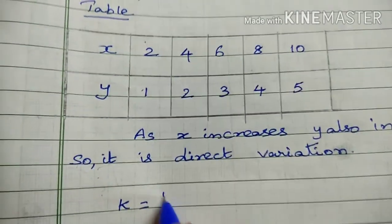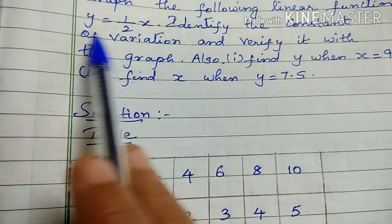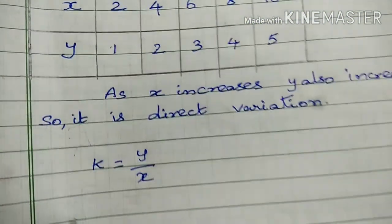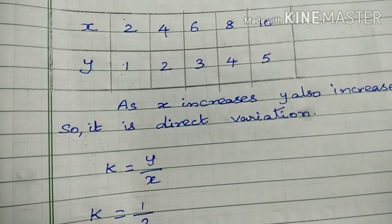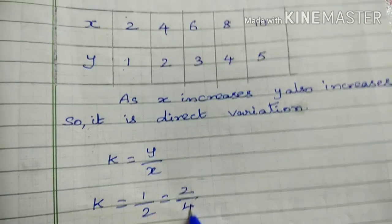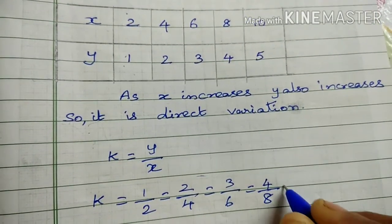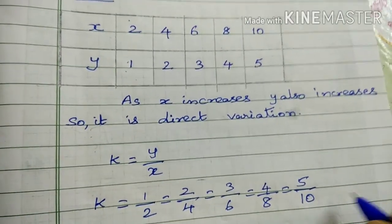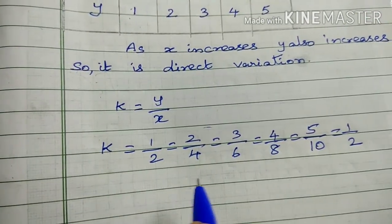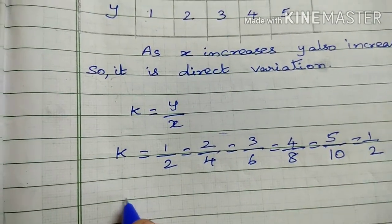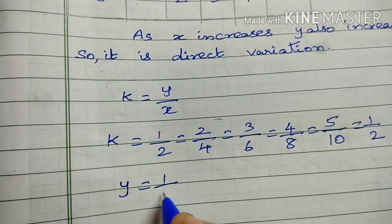k is equal to y by x. You can put the equation here: k equal to y by x, x is on the left side. Dividing: 1 by 2, 2 by 4, 3 by 6, 4 by 8, 5 by 10 — all equal to 1 by 2. So k is equal to 1 by 2. The equation is y equal to kx, that is y equal to 1/2 x.